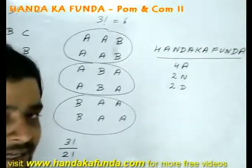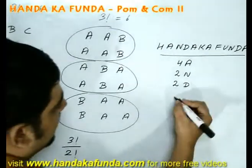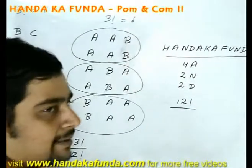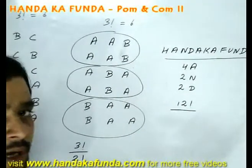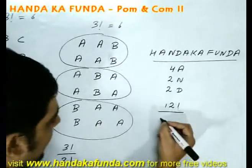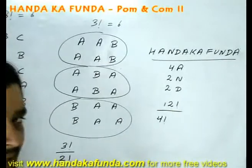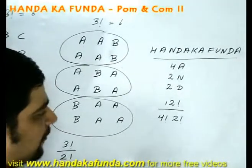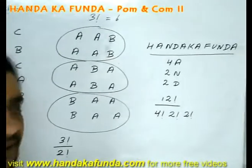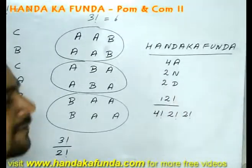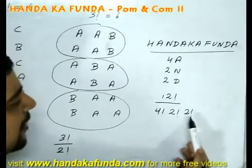Let's look at 'Handa ka Fanda' as an example. We have 12 letters. If all were distinct they could be rearranged in 12 factorial ways. But this word has 4 A's, so divide by 4 factorial. The two N's are identical, so divide by 2 factorial. The two D's are also identical, so divide by another 2 factorial. The total number of arrangements is 12 factorial divided by (4 factorial × 2 factorial × 2 factorial).